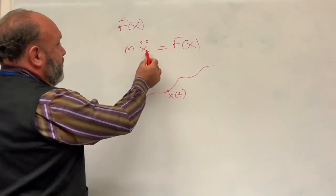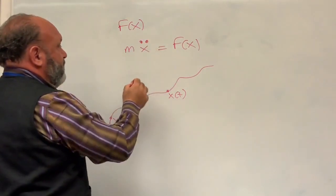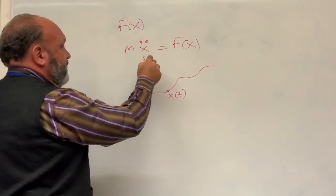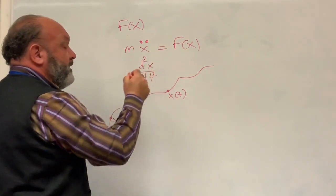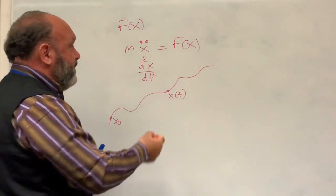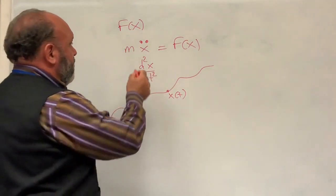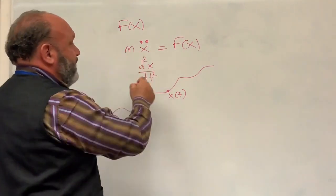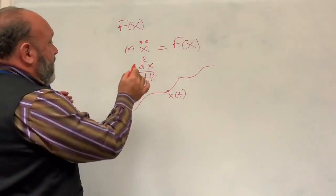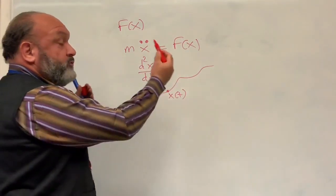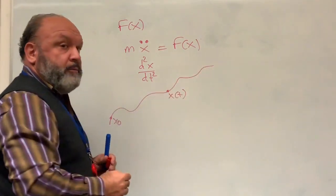Why is this an equation? x-dot-dot means the second derivative — the second derivative of x with respect to time. The rate of change of velocity in time, which is the acceleration, times the constant given by the mass, equals the forces. By finding the location x(t), we are solving the differential equation and finding the movement of the particles.